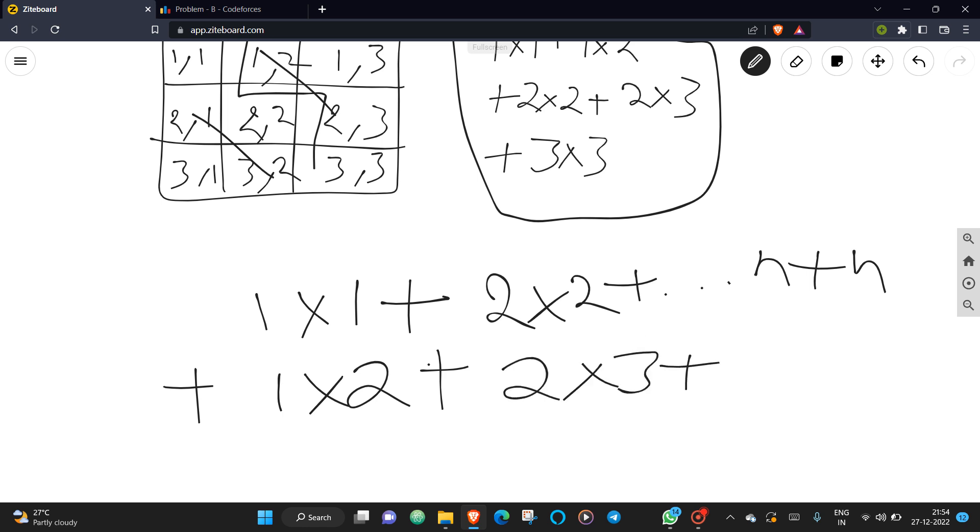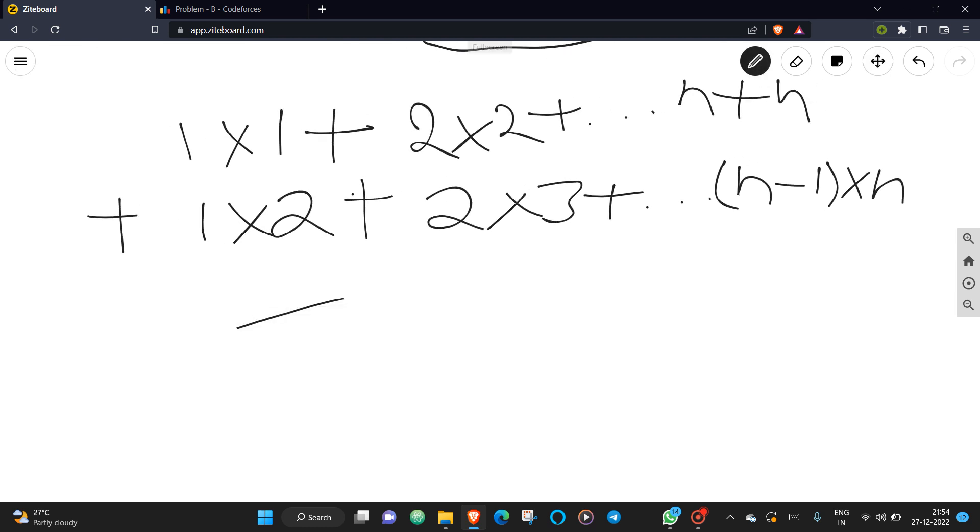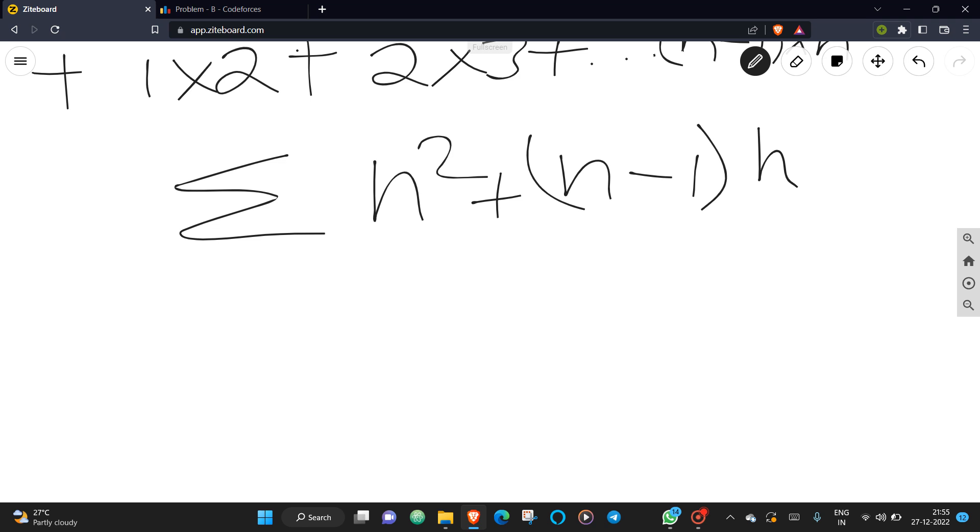Plus sum of n minus 1 times n. If you derive a formula for this, you get summation of n² plus (n-1) times n plus summation of (n-1) times n. If you expand this, you get n² plus n² minus n.